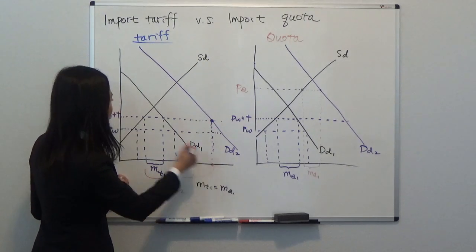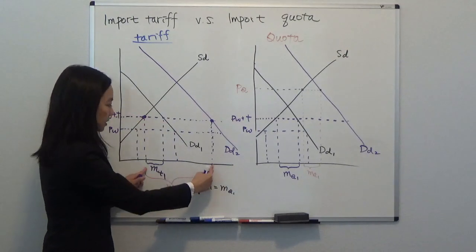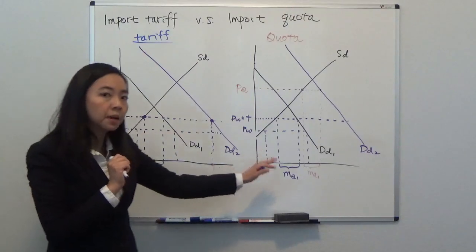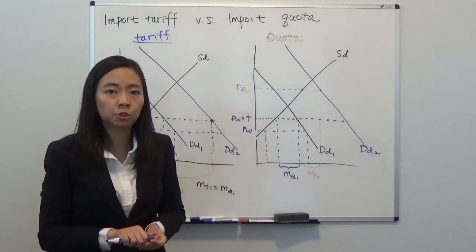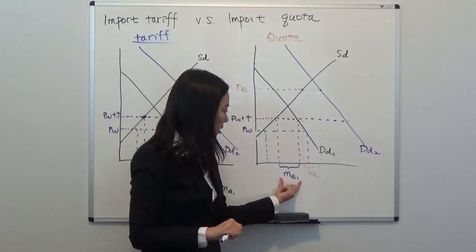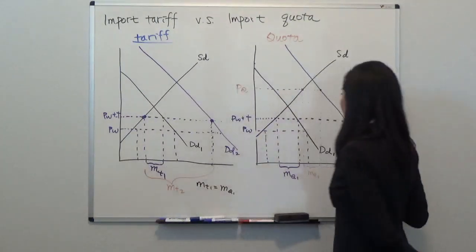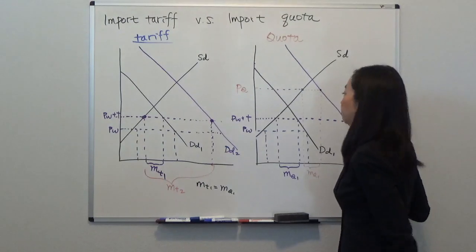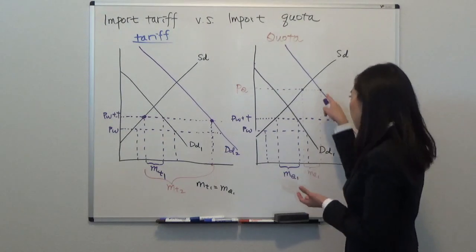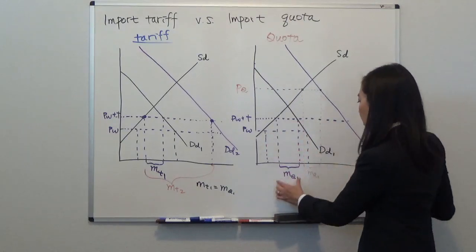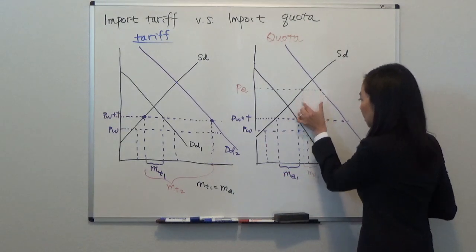But with quota it's much more restrictive because the government tells you you can only import MQ1. So with your new demand curve, you will have to find a distance between your demand curve and your domestic supply curve that gives you exactly MQ1, and that's here.